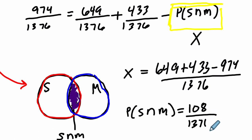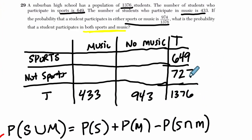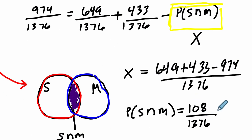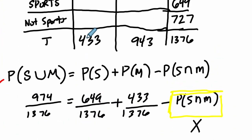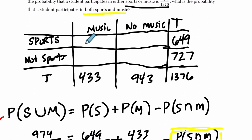Now, are we done? I don't know. I don't remember the question. Let me go back up. What is the probability that a student participates in both sports and music? Yes, we did it. It's 108 out of 1376. But let's go back to the table and check something out here. So 108 students out of the total play both sports and music. That's this. That's this joint frequency.